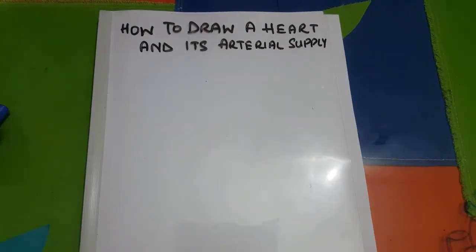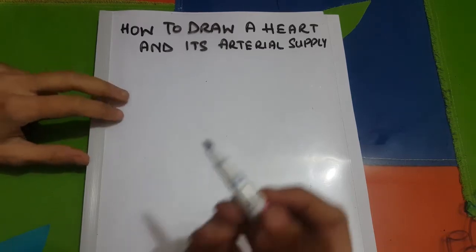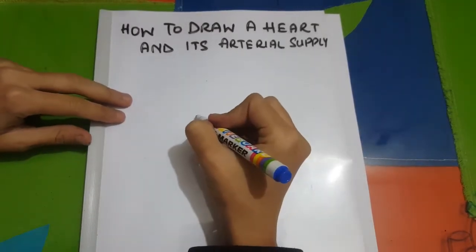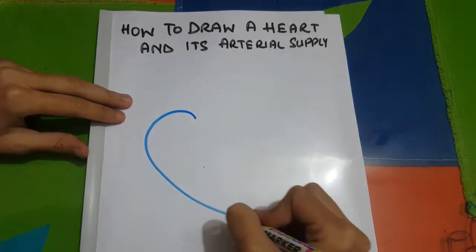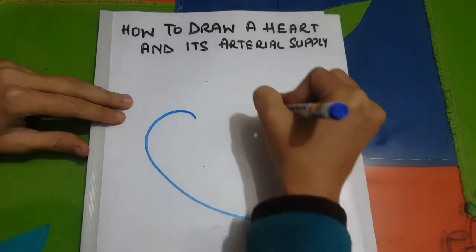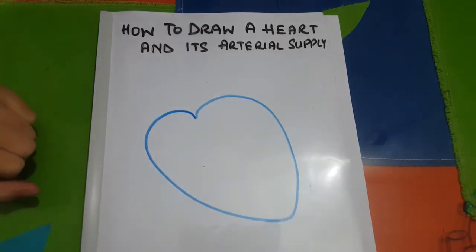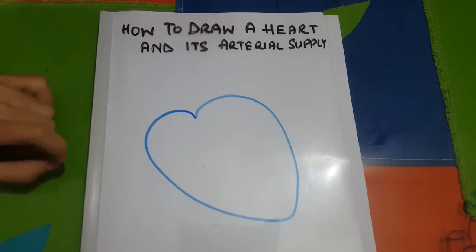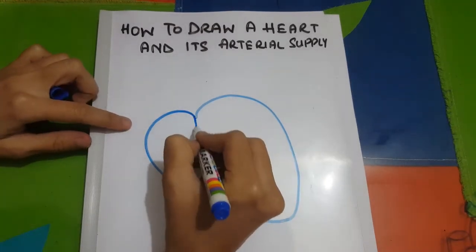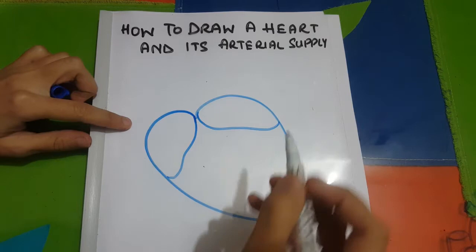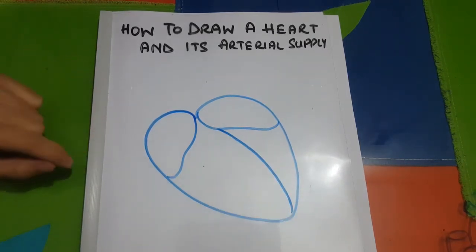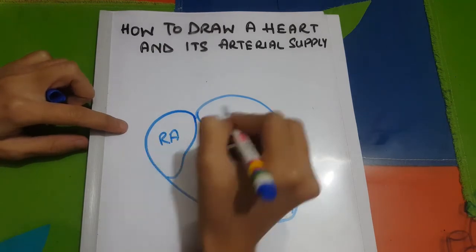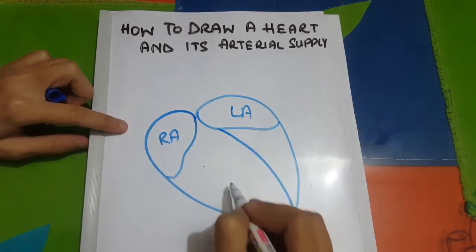In this video I'm going to show you how to draw a heart and its arterial supply. First, make a heart shape. Then you make the right atrium, the left atrium, and the interventricular septum. This is the right atrium, this is the left atrium.